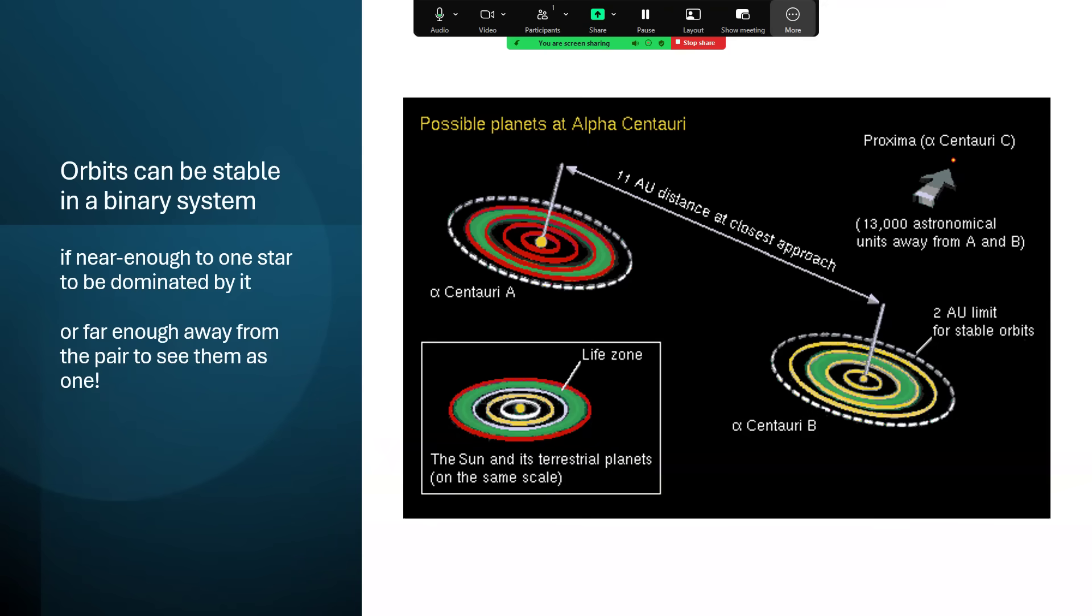Now the question has always been in these double star systems like Alpha Centauri A and B, can you orbit planets? Is that possible? Can you have stable orbits? Well the answer is yes, in one of two ways. Either you orbit one of the stars, doesn't matter which one, close enough that you are in a zone where its gravity is dominant and the other star is far enough away that it doesn't affect things. That's called being inside the hill sphere of the star, and you can mathematically work that out.